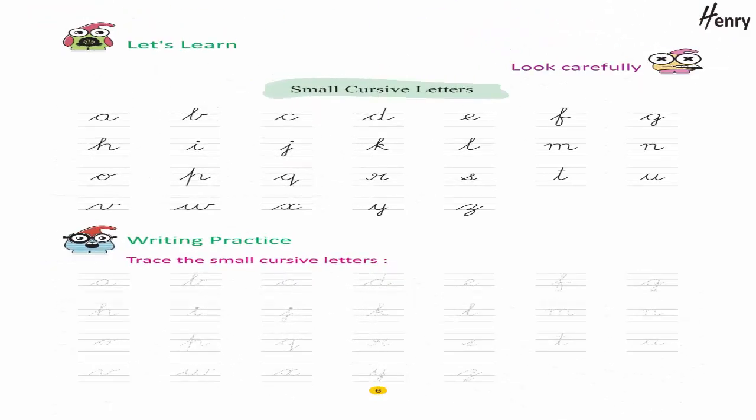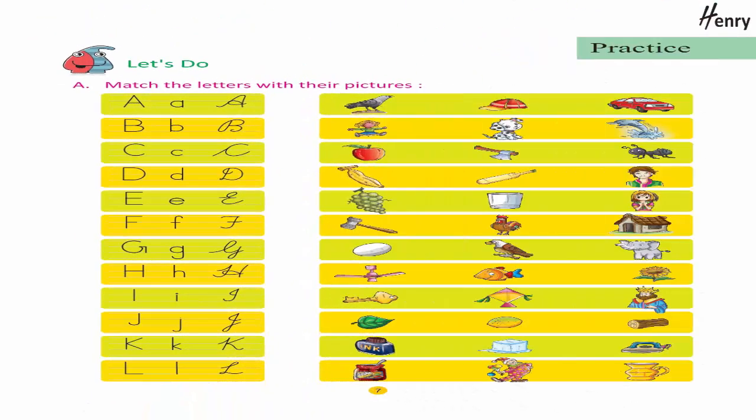Let's learn. Look carefully, small cursive letters: A B C D E F G H I J K L M N O P Q R S T U V W X Y Z. Writing practice: trace the small cursive letters. Practice: let's do — match the letters with their pictures.